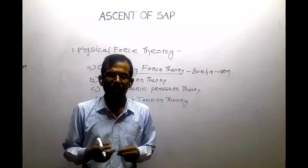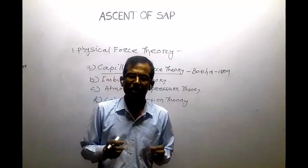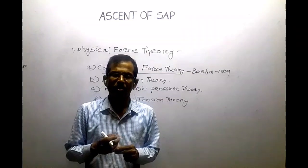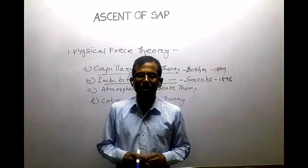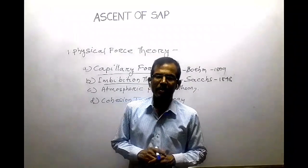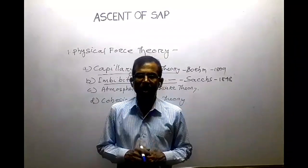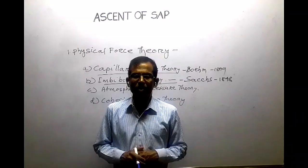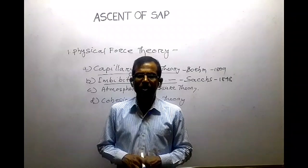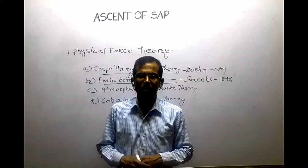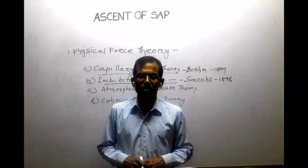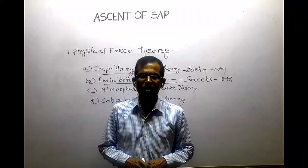He suggested that the normal atmospheric pressure and the capillary nature of the xylem vessels are responsible for this upward movement of water. During the upward movement, two different forces operate in the xylem vessel: one is the adhesive force between water molecules and the wall of the vessel, and the other is the cohesive force that operates among water molecules. Because of these two forces, water is pulled up through the xylem vessel.